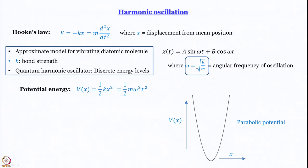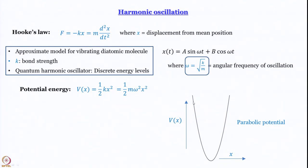By the time we close the discussion in this module, we will have something to say about that angular frequency. This angular frequency of oscillation is given by √(k/m), where k is the force constant of the spring and m is the mass. For a harmonic oscillator, from classical mechanics itself, we know that the potential energy is parabolic.